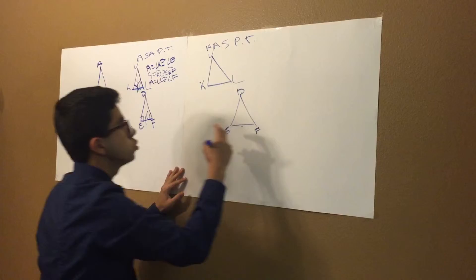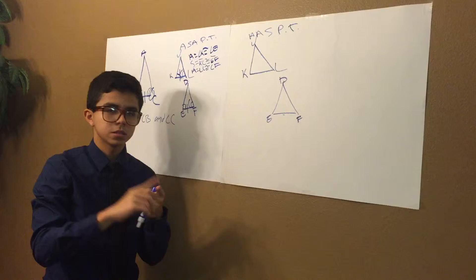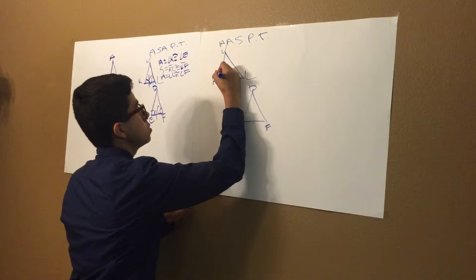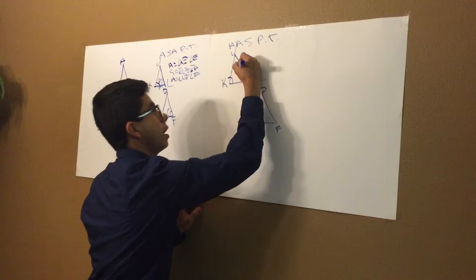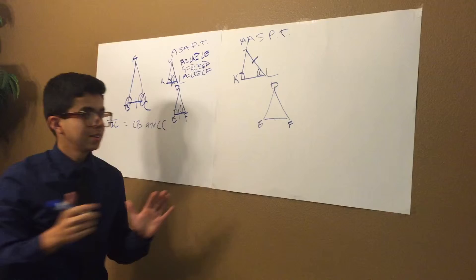So what I mean about a non-included side is when the side, the segment, is not between the two consecutive angles. So this is angle K and angle L. But the non-included side is going to be on the side rather than in between. So far so good?